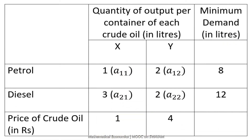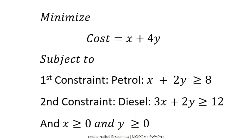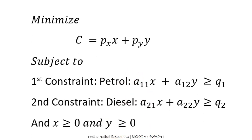Did you get it? Following the general structure of a linear programming problem discussed in the previous video, this problem may be expressed like this. Note that 8 and 12 are the minimum consumer demand. In symbols, this problem may be generalized like this.